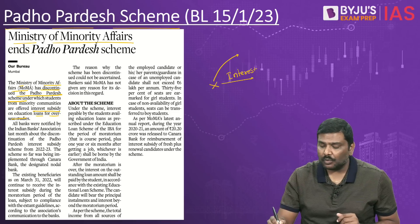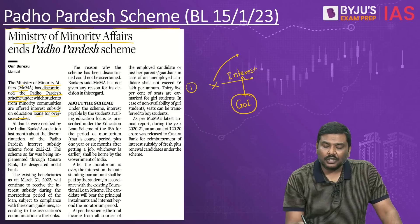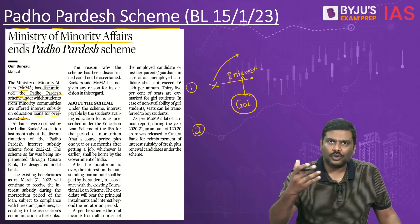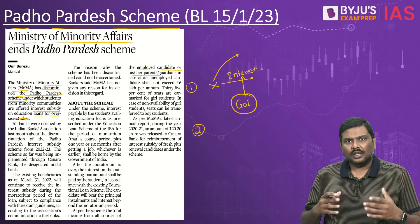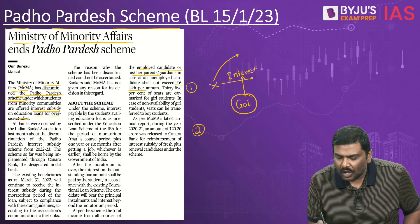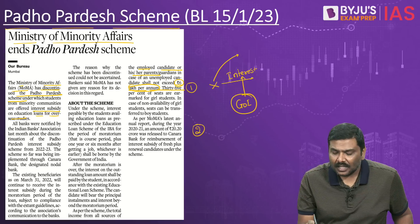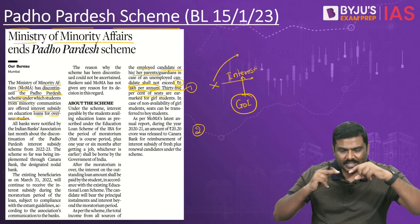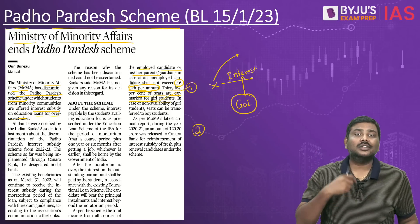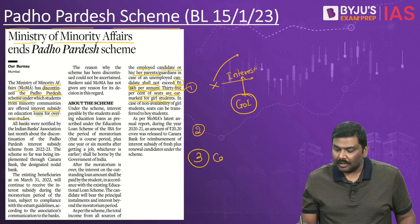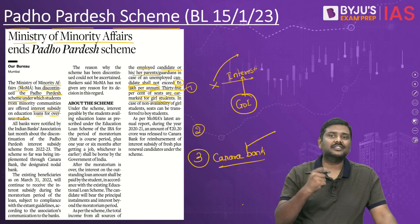Eligibility condition: the student's (or their parents') total annual earnings should not exceed ₹6 lakh per annum. Additionally, more than one-third (35%) of the seats under the scheme were reserved for girl candidates. Importantly, Canara Bank was the nodal bank for the implementation of the Padho Pardesh scheme.